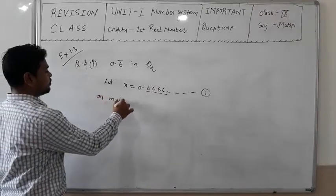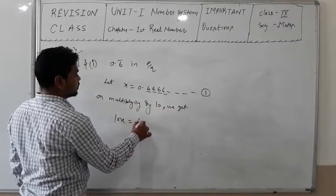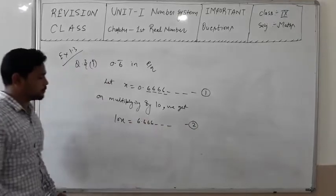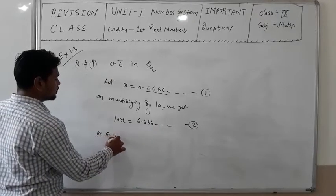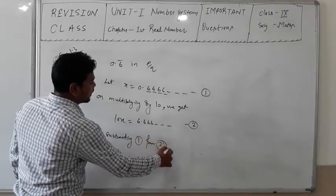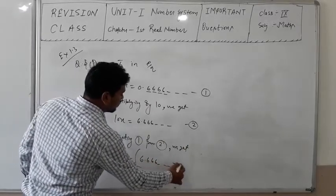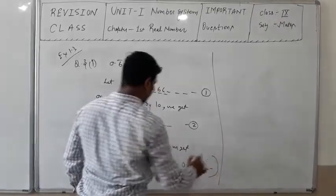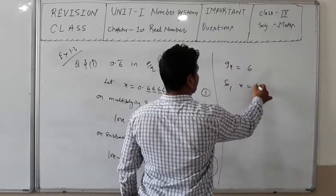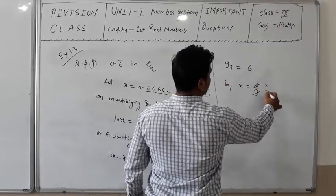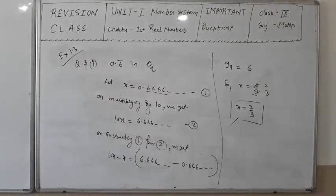We have x = 0.6666... and 10x = 6.6666... On subtracting equation 1 from equation 2: 10x - x = 6.6666... - 0.6666..., so 9x = 6. Therefore x = 6/9, which simplifies to x = 2/3. So 0.6̄ in the form P/Q is 2/3.